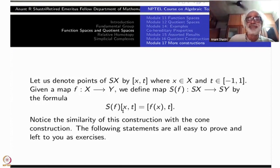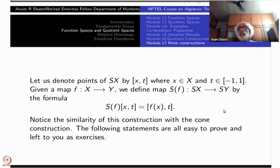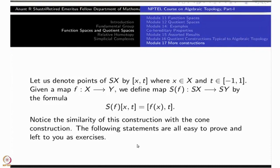This is similar to the construction of Cf: whenever f is a continuous function from X to Y, you get a map on the cones. The suspension has all the typical functorial properties. If you take the identity on X, then S of identity is the identity function on SX. If you have f: X→Y and g: Y→Z, then S(g∘f) = Sg∘Sf, because all those things are happening in the first coordinate — the t-coordinates do not disturb the functoriality.